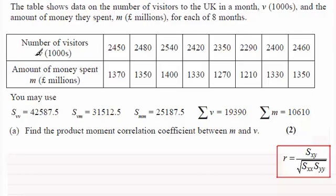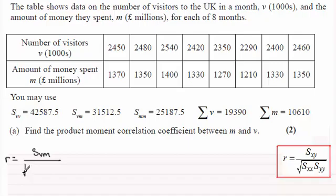We've got to change X and Y to correlate with V and M, so X is V and Y is M. Therefore R is equal to — instead of SXY it's going to be SVM — and this is all divided by the square root of SVV times SMM. We can take our results from what's given up here.